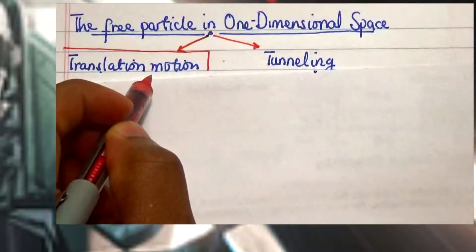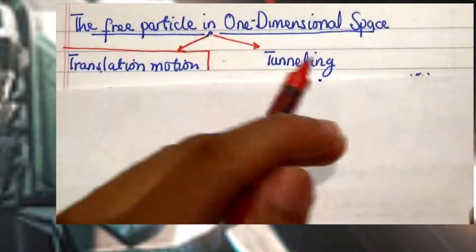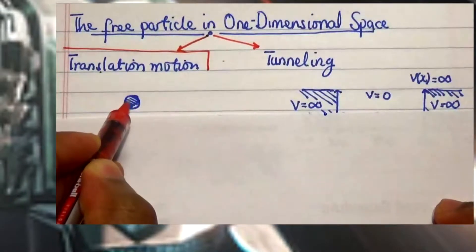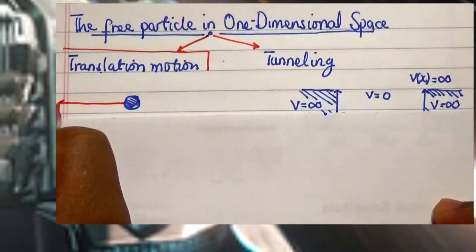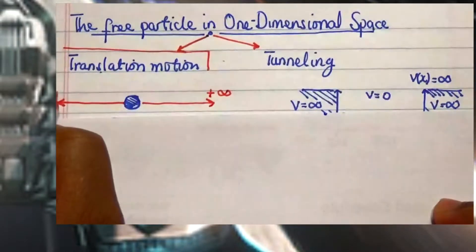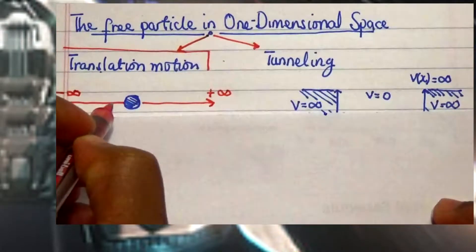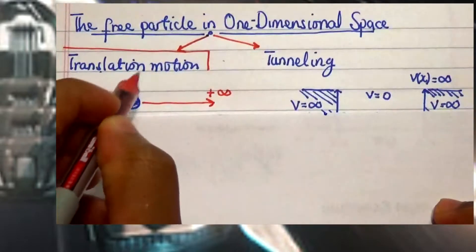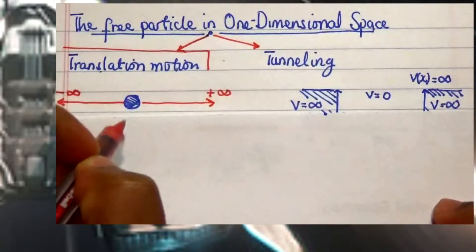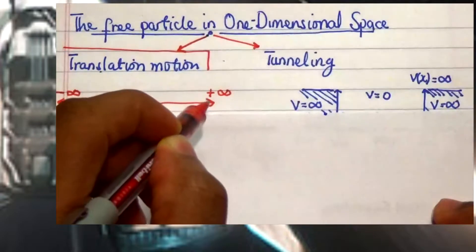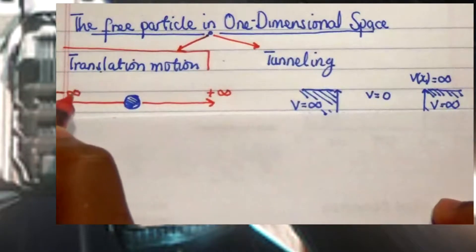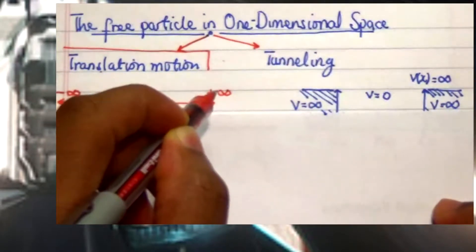Translational motion is the quantum mechanical description of one particle in free space. If you have a particle in free space, it will move to infinity — either positive infinity or negative infinity — moving left or right. We are not considering up-and-down movement, because that would require considering potential energy. Here we are only looking at kinetic energy, moving left toward negative infinity or right toward positive infinity.